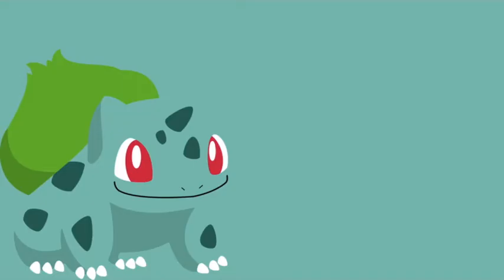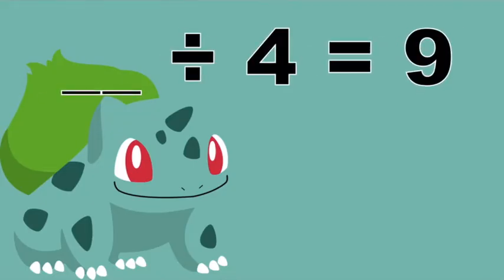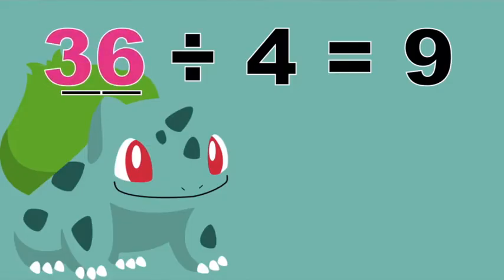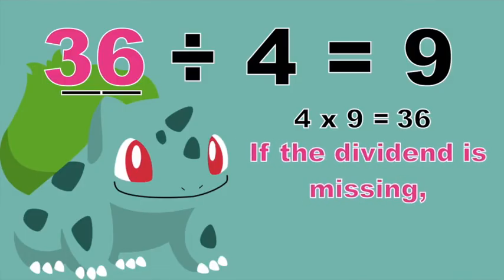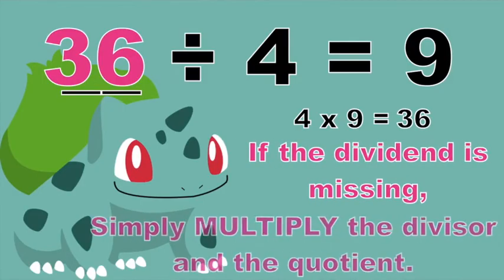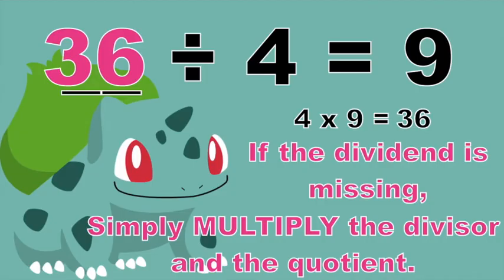How about if I have this: blank divided by 4 is equal to 9. What do you think is the dividend? Good job! That is 36. To check if your answer is correct, simply multiply 4 and 9. 4 times 9 is equal to 36. Always remember, if the dividend is missing, all you need to do is to multiply the divisor and the quotient.